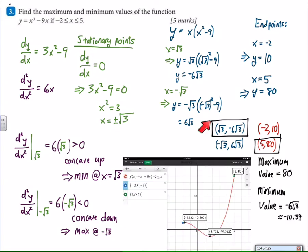So to answer the question, there's a minimum value, a maximum value 80, and a minimum value approximately negative 10.39.